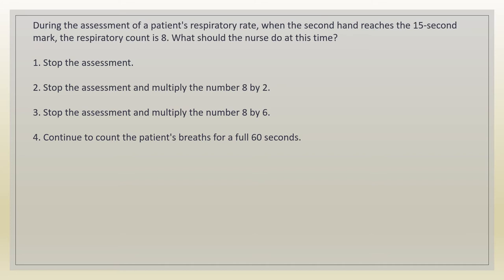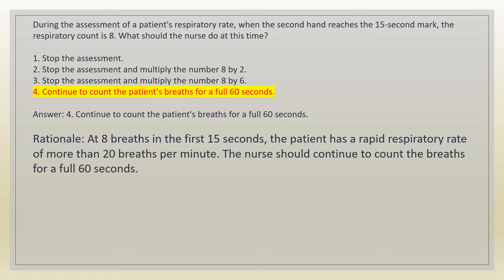During the assessment of a patient's respiratory rate, when the second hand reaches the 15-second mark the respiratory count is 8. What should the nurse do at this time? 1. Stop the assessment. 2. Stop the assessment and multiply the number 8 by 2. 3. Stop the assessment and multiply the number 8 by 6. 4. Continue to count the patient's breaths for a full 60 seconds. Answer: 4. Continue to count the patient's breaths for a full 60 seconds. Rationale: at 8 breaths in the first 15 seconds, the patient has a rapid respiratory rate of more than 20 breaths per minute, so the nurse should continue counting for the full 60 seconds.